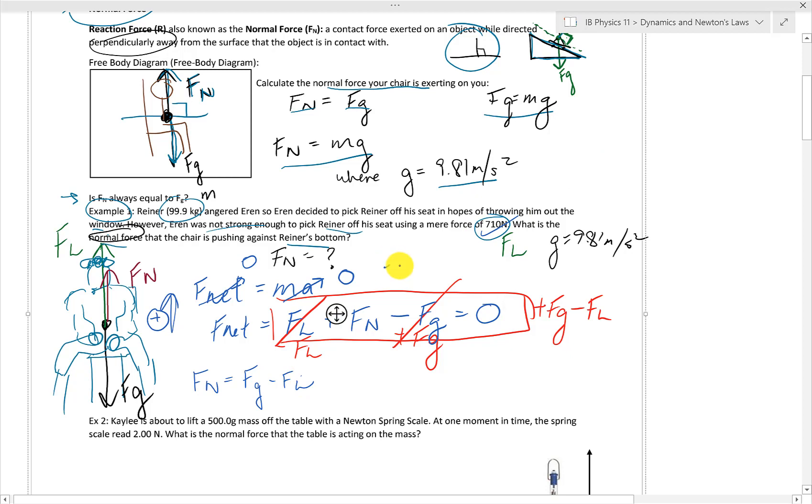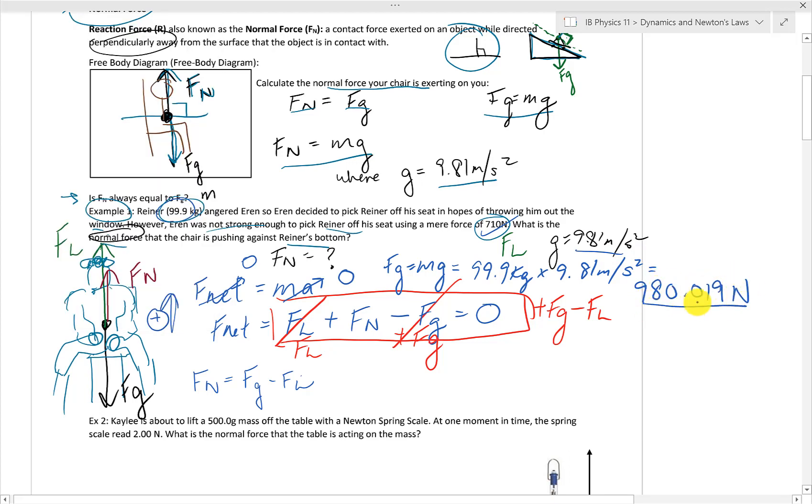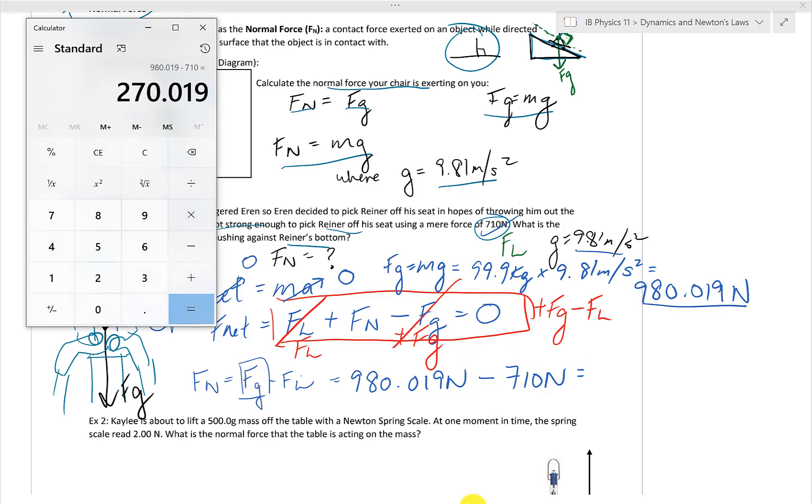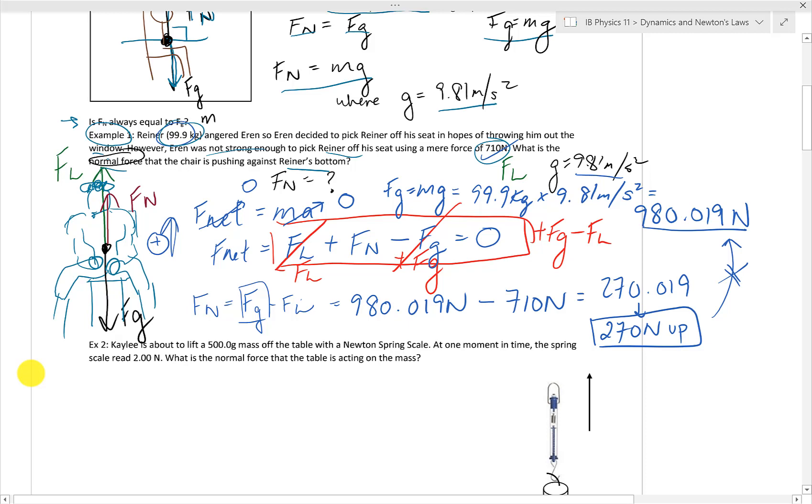We know that Fg is equal to mg, and Reiner's weight is 99.9 kilos times gravity. Let's calculate that out. We get 980.019 newtons, which I'm not going to round now, but we'll substitute here in this equation I have with Aaron's lift force to find his normal force. We get Reiner's normal force is 270.019. Rounding up to two significant figures, we get 270 newtons in the upwards direction. Notice that is not equal to Reiner's weight, because Aaron did a bit of a job in holding him up on a seat.